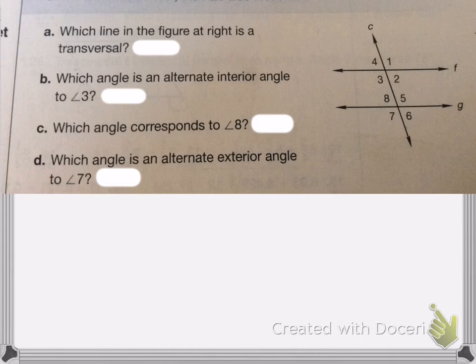So one more example. Which line in the figure to the right is the transversal? The transversal is the line that goes through. So that means that the line is C. On B, which angle is alternate interior angle to number 3? So alternate interior angle, it's going to be on the opposite of the line, inside, so that's going to be 5.